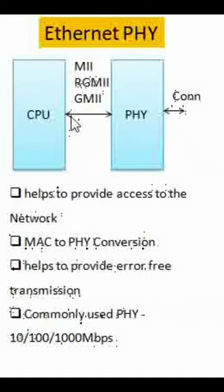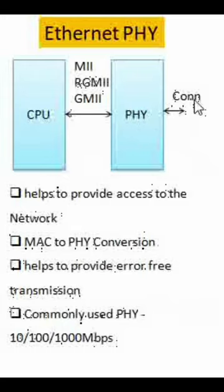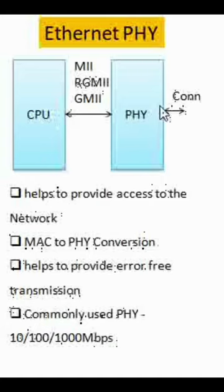These are the protocols involved in it, and then the PHY helps to convert to the physical interface over the J45 connector. So in your circuit the flow will be like this: the PHY helps to convert the MAC interface to the PHY interface, and also has a built-in error control mechanism.